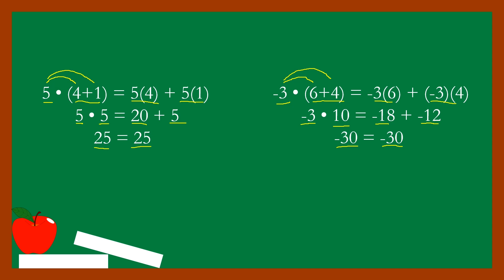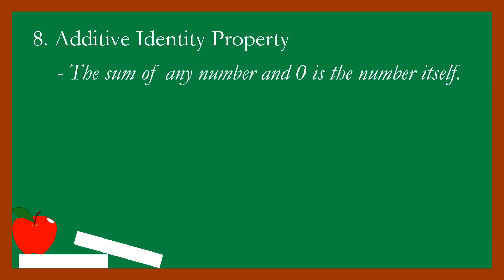This shows that multiplying a number by the sum of two or more addends gives the same result as distributing that number to each addend before getting the sum. Property number eight: the additive identity property. The sum of any number and zero is the number itself. The notation is: a plus zero is equal to a.